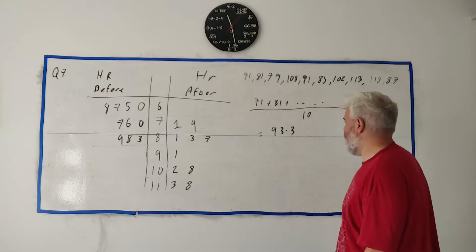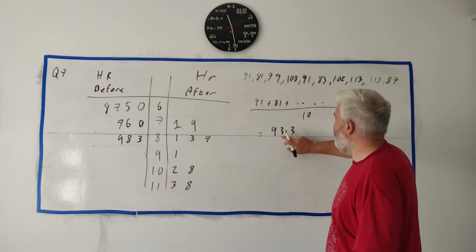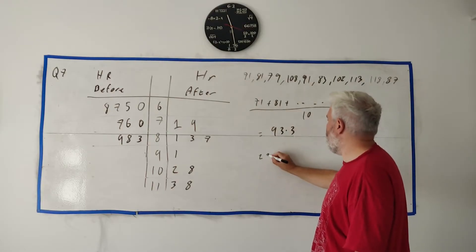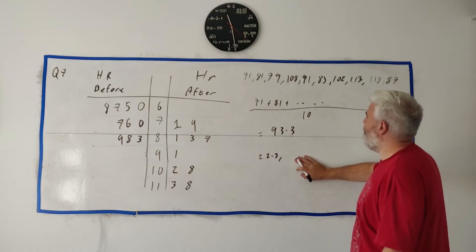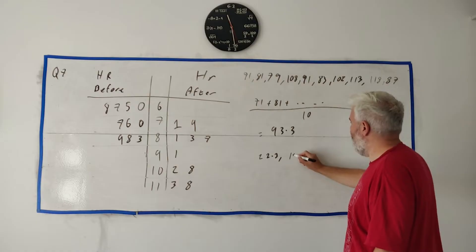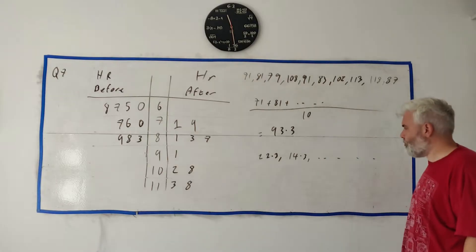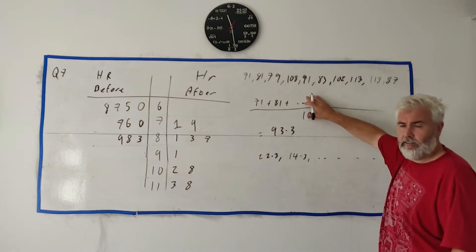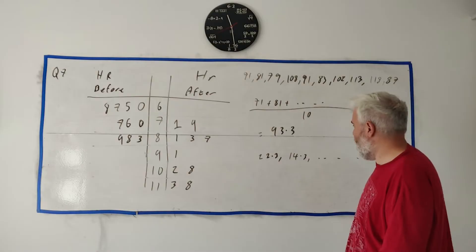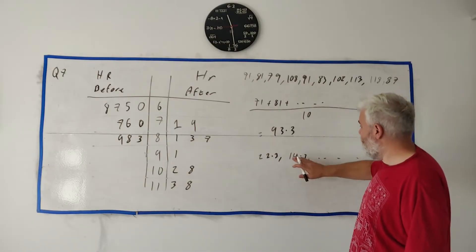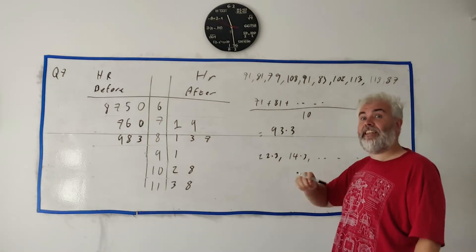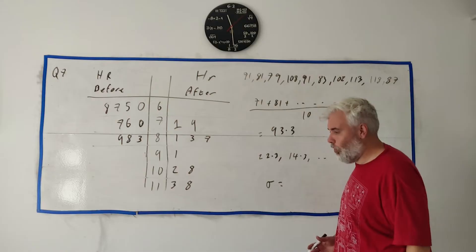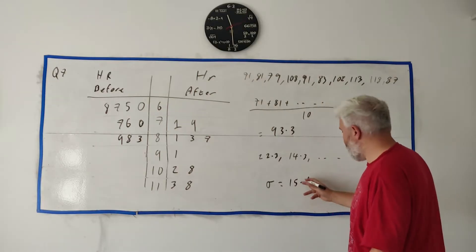For standard deviation, to do it by hand you need to get the mean first, then find the difference from the mean for each value — for example, the difference from 93.3 to 71 is 22.3. You do this for all of them, then square each difference, add them all together, divide by 10, and then take the square root of that number. That gives your standard deviation — but it's much easier to just use your calculator, which tells me it's 15.1, rounded to one decimal place.